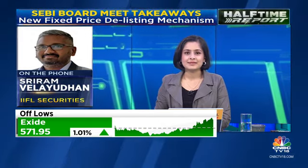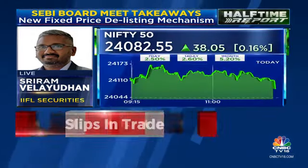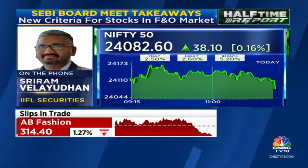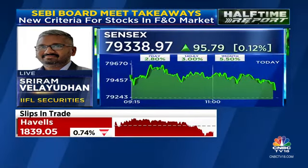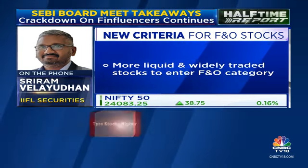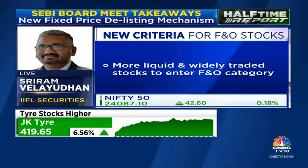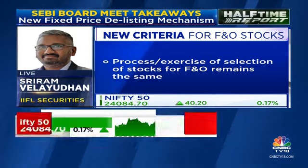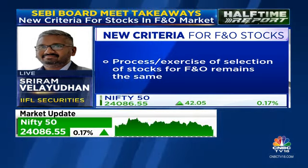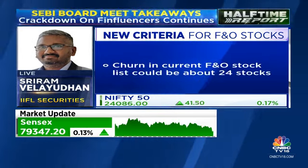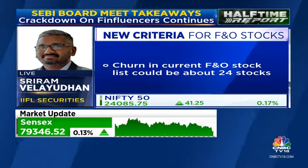Hi, good afternoon. So yesterday late evening, SEBI released the much-awaited revised FNO eligibility framework. The broad contours of the new rules remain the same — in terms of criteria like liquidity, quarter-sigma, market-wide position limit, deliverable value and all, the criteria haven't changed. But the threshold for inclusion and exclusion has undergone significant change. In terms of quarter-sigma, it has been raised from 25 lakhs to 75 lakhs. Market-wide position limit from 500 crores to 1,500 crores, and deliverable value from 10 crores to 35 crores.